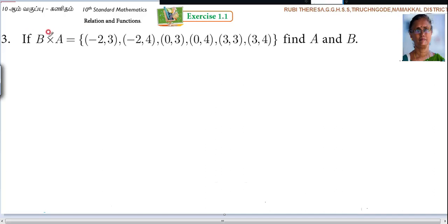Listen here, if B cross A equals {(-2,3), (-2,4), (0,3), (0,4), (3,3), (3,4)}, find A and B.